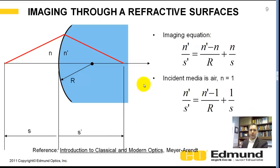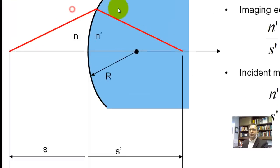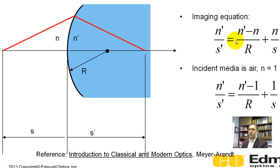Let's talk about imaging through a refractive surface. Now, because you've got two different index of refractions, you can use this imaging equation here. And again, this uses the Cartesian coordinate system. N prime divided by S prime, this S prime is your image distance here, is equal to the difference in the index divided by radius, plus your incident media divided by your object distance.